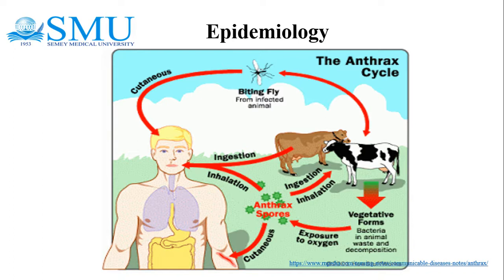Anthrax can also be used as a weapon. Anthrax was deliberately spread through the postal system by sending letters with powder containing anthrax spores, which caused 22 cases of anthrax infection.